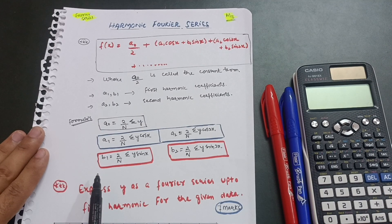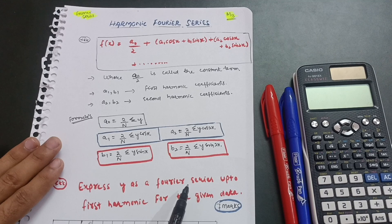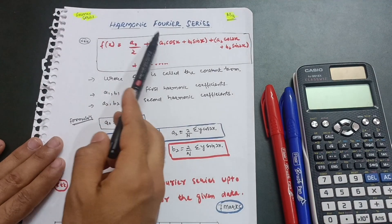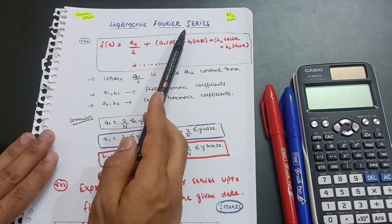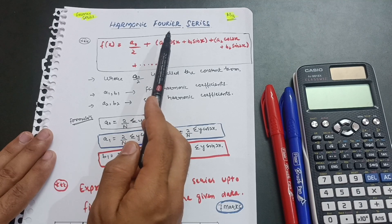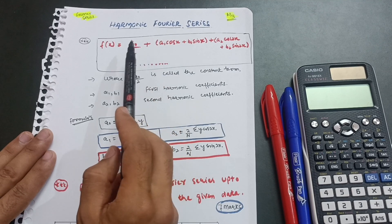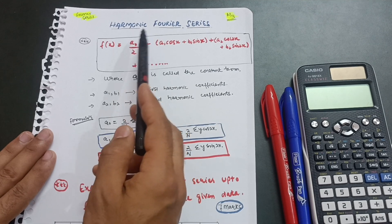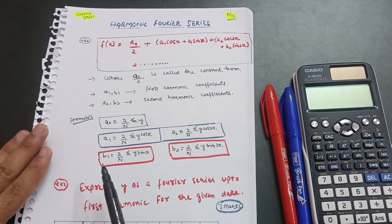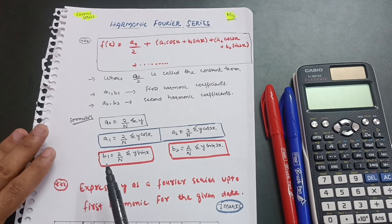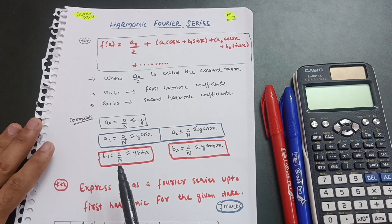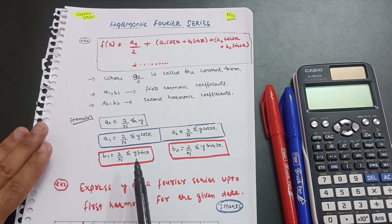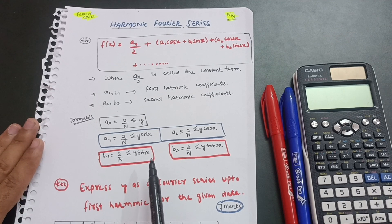Hello everyone, welcome back to my channel. In this video I'm going to discuss the most important question as far as VTU examination is concerned — the Harmonic Fourier Series for M3, subject Mathematics Third, subject code 21MAT31 for the 2021 scheme VTU. I'll provide links to my other videos in the description box.